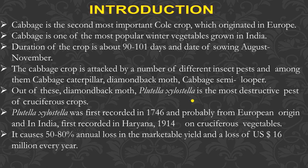Cabbage is the second most important cold crop, which originated in Europe. It is one of the most popular winter vegetables grown in India. The duration of the crop is about 90 to 110 days, and the date of sowing is August to November.